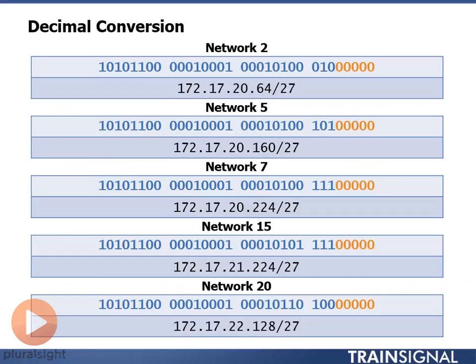Convert these back to decimal. Network 2: 172.17.20.64/27. Network number 5: 172.17.20.160/27. 172.17.20.224/27 is network number 7. Network 15: 172.17.21.224/27. And last, network 20: 172.17.22.128/27.